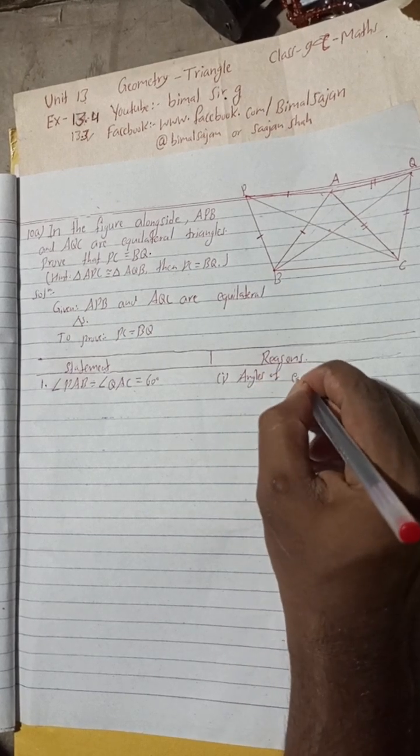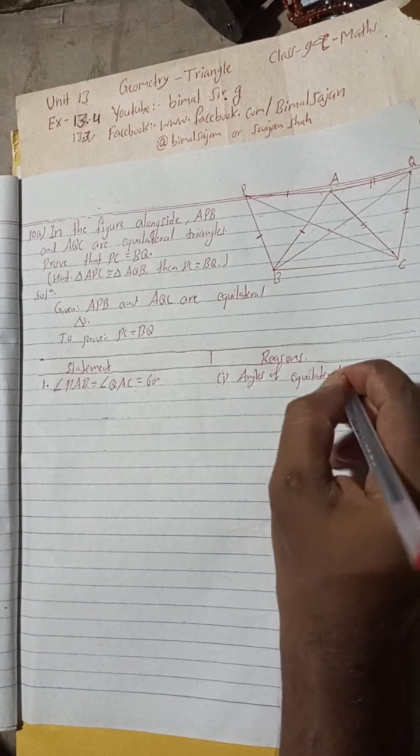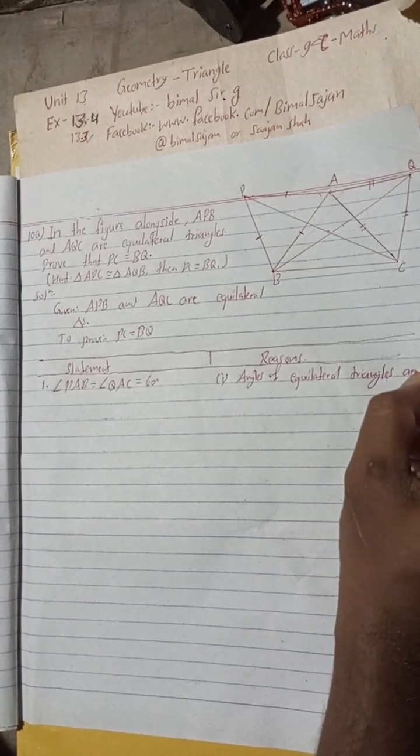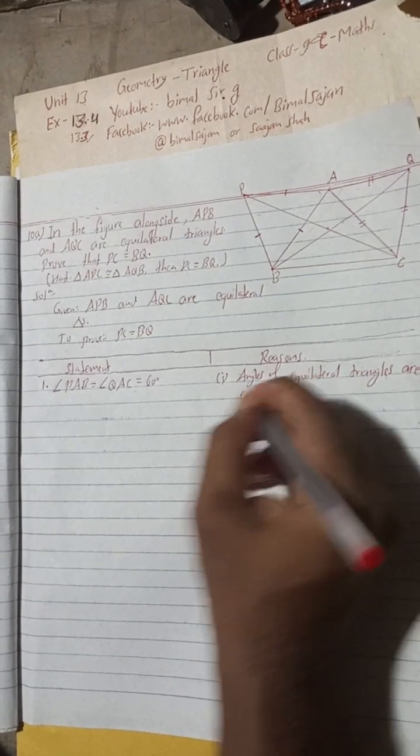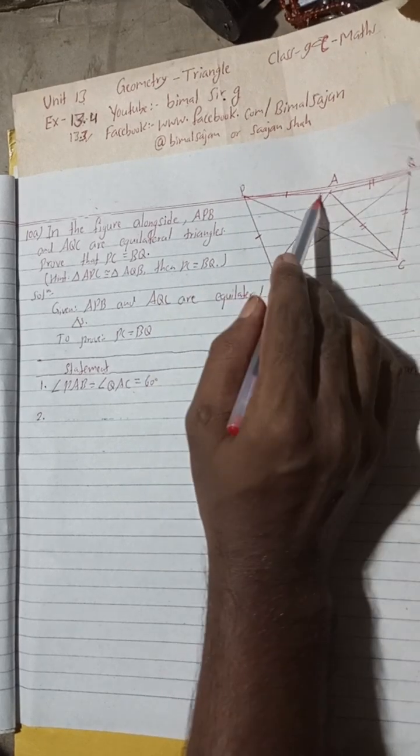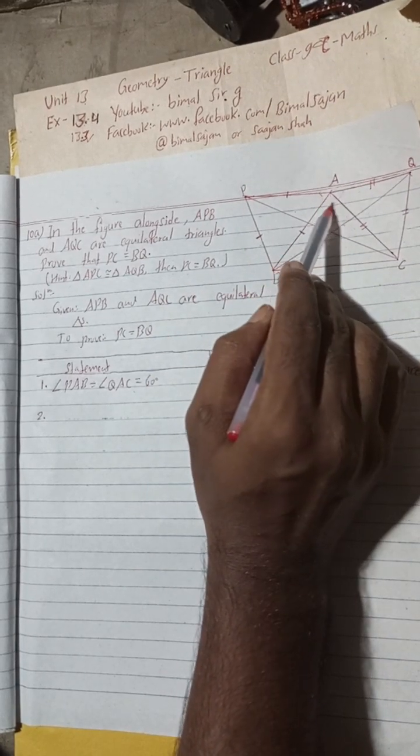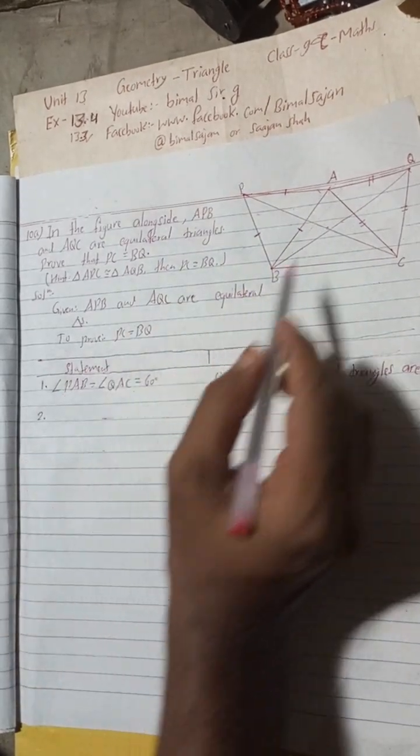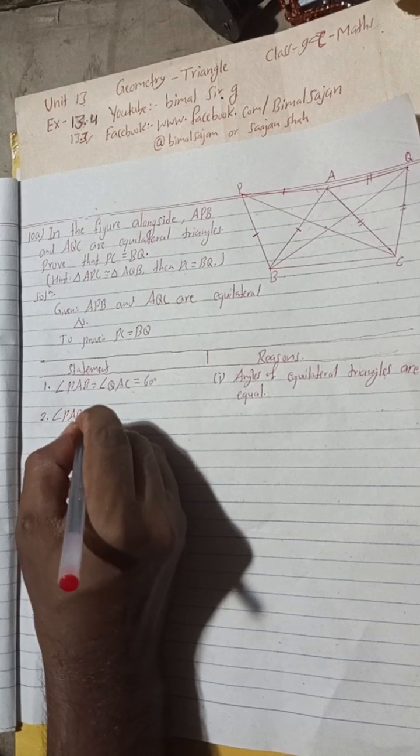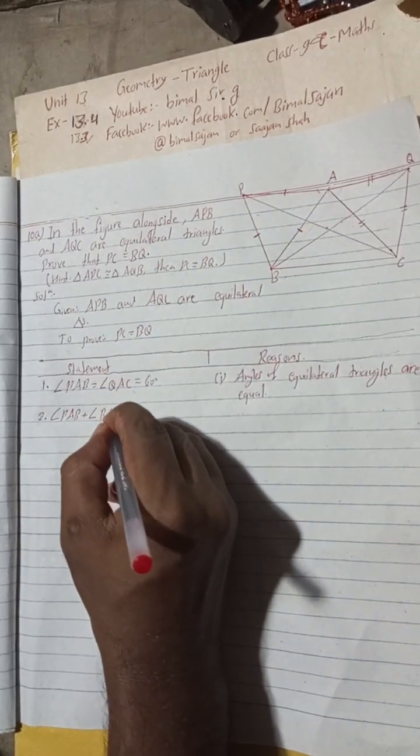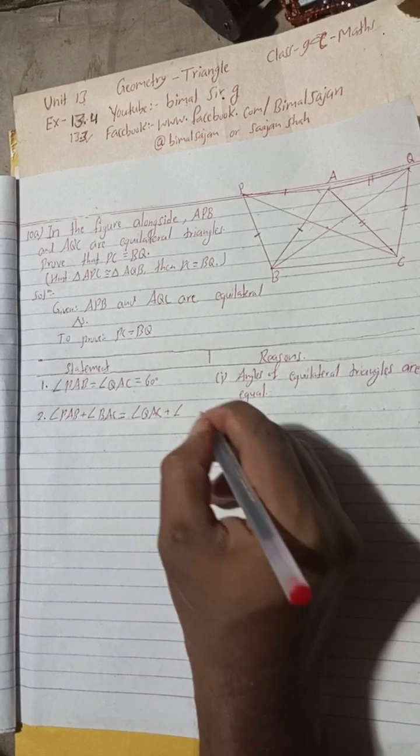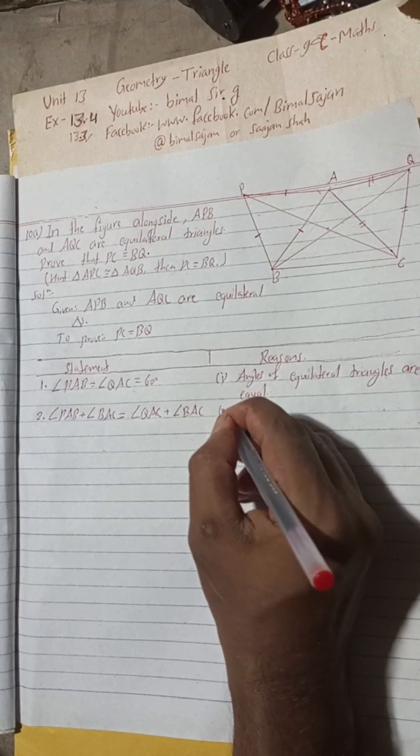Number two: angle PAB plus angle BAC is equal to angle QAC plus angle BAC. This angle, when we add this common angle BAC on both sides, the statement becomes: angle PAB plus angle BAC equals angle QAC plus angle BAC.